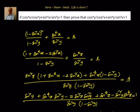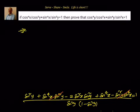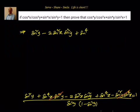Now can I cancel something here? Let us see what we can cancel. We can cancel sin⁴x·sin²y terms, then take the denominator to the right-hand side. The next step will be: sin²y − 2sin²x·sin²y + sin⁴x equals sin²y·(1 − sin²y), which when multiplied gives sin²y − sin⁴y.